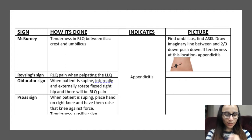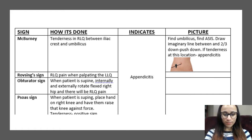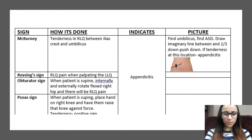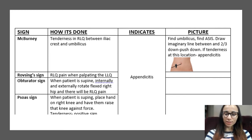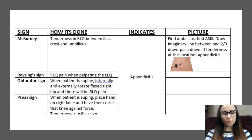The next one is obturator sign. You're going to lay the patient flat and internally and externally rotate and flex the right hip — they're going to feel right lower quadrant pain. The next one is Psoas sign. The patient is again lying flat; you place your hand on the right knee and have them raise the knee against the force. If there's tenderness, it's a positive sign. McBurney's, Rovsing's, obturator, and Psoas sign all indicate appendicitis.